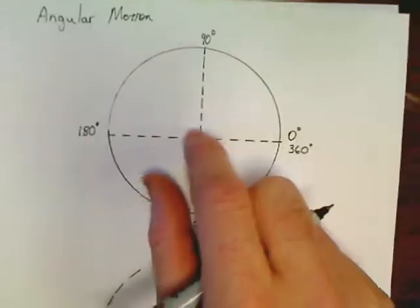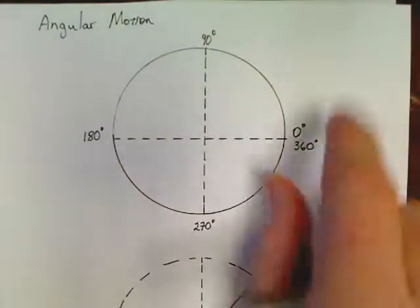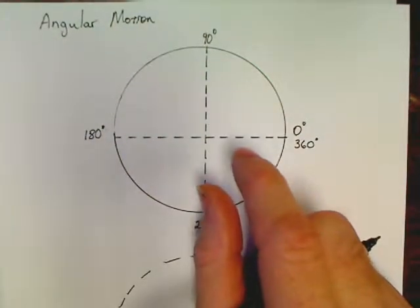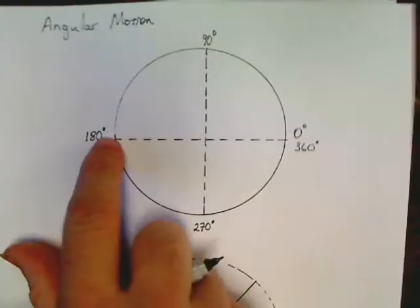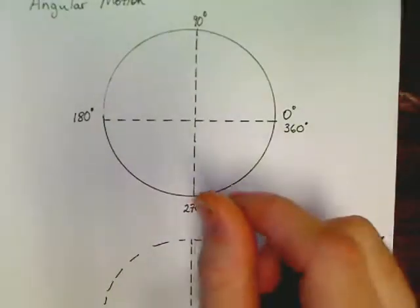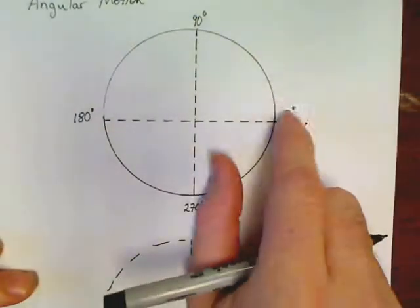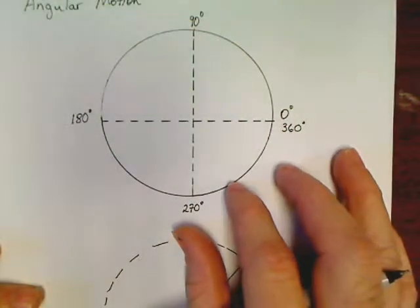So far, everything we've done in physics up to this point, we've done in degrees. Now, here's the only catch. This chapter, you cannot use degrees for anything. If you work a problem and it gives you 40 degrees, you've got to convert that.